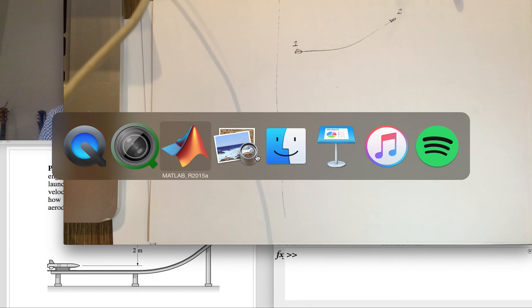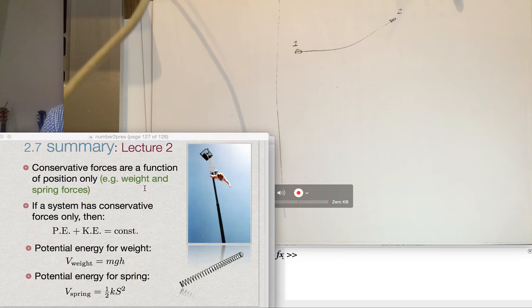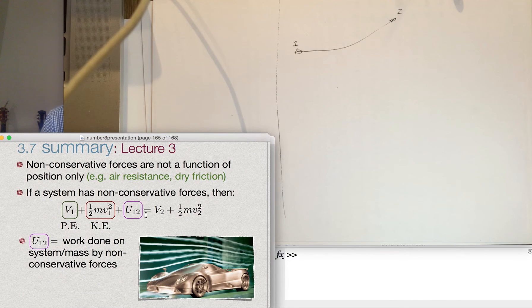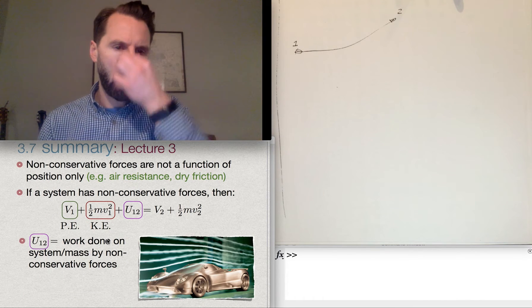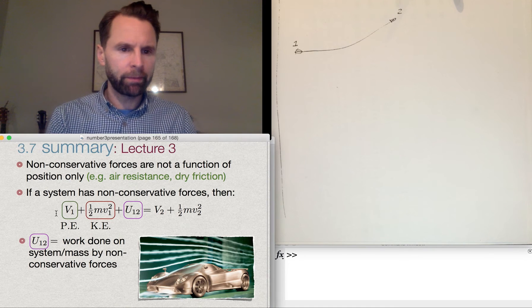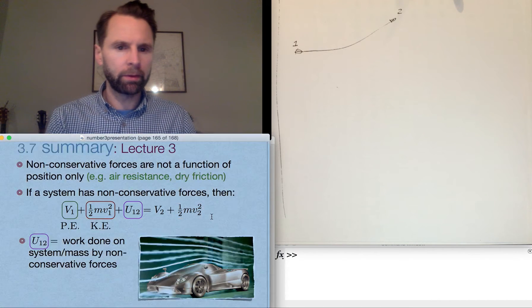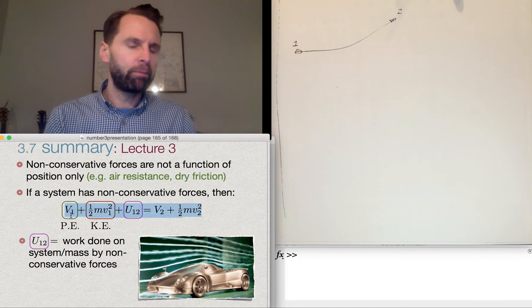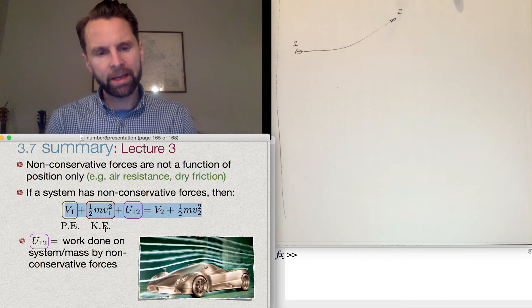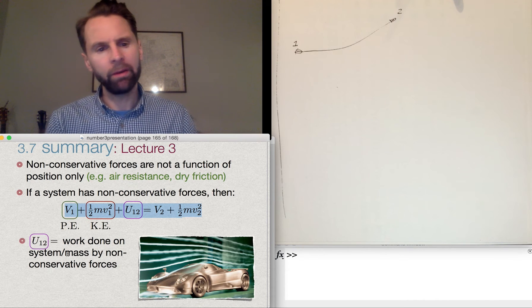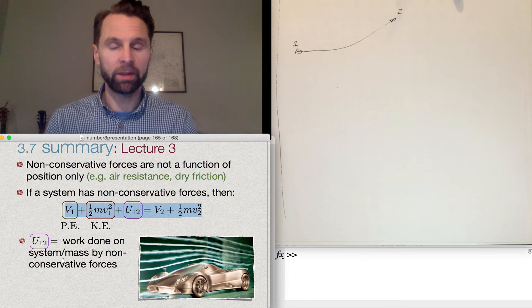So let's go to Lecture 3 and you can see that here it is. We've got the potential energy plus kinetic energy plus the work done on the system, so in this case the rocket by non-conservative forces.